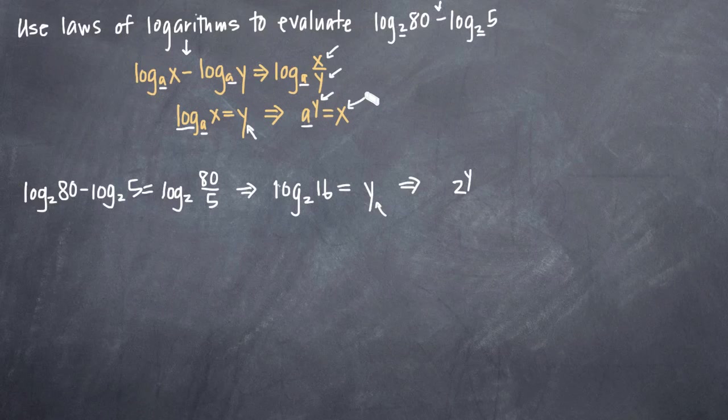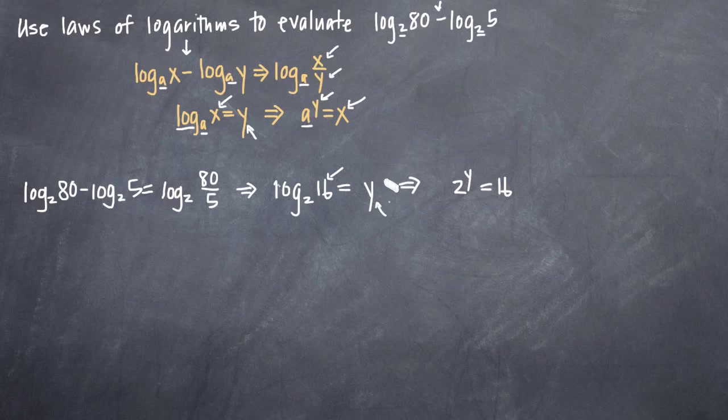Now over here on the right side, all we need is x, which we know is what we've got over here with our log and in our case, that's 16. So we'll call this 2 to the y equals 16 and that's the way that we can simplify log base 2 of 16 equal to some variable. It turns into 2 to the variable is equal to 16.